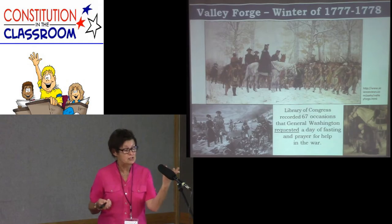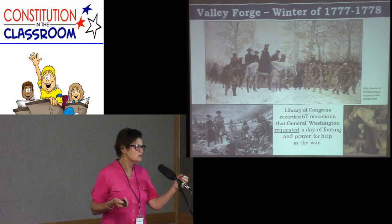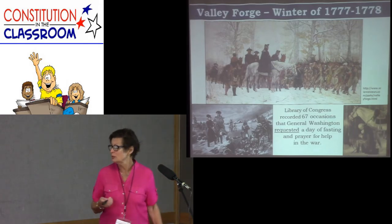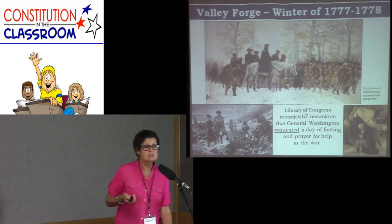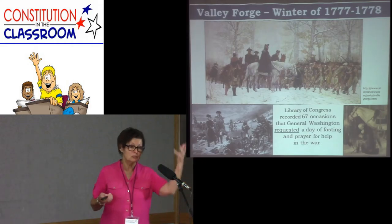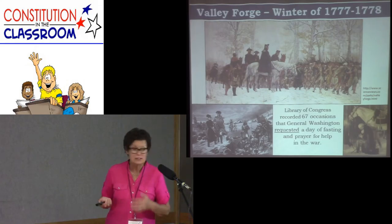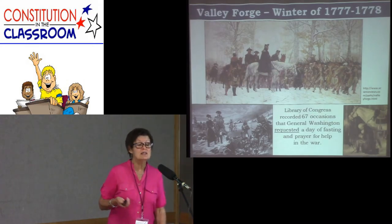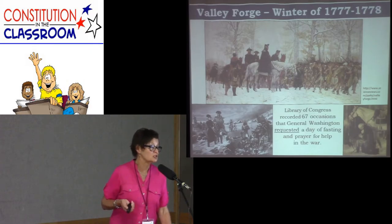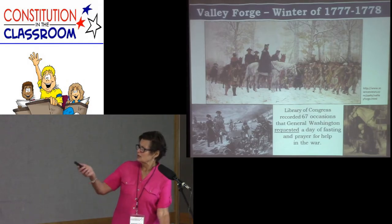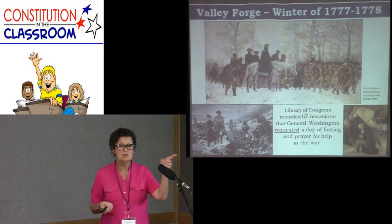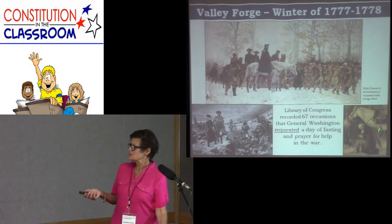This is Valley Forge, going back to 1777 — a terrible time for the troops, partly because they were operating under the Articles of Confederation without a proper national government. The states were all independent and would argue about whose turn it was to feed the troops. In the meantime, the troops were starving — you could tell where the Continental Army had been from the blood in the snow from the tracks of their bare feet. Their shoes were worn out, and it was a terrible, desperate time. The Library of Congress recorded 67 occasions that General Washington requested a day of fasting and prayer for help in the war.